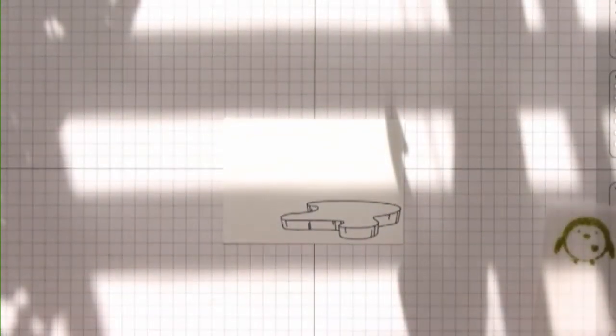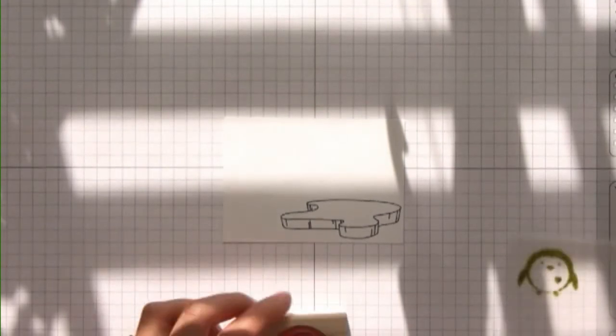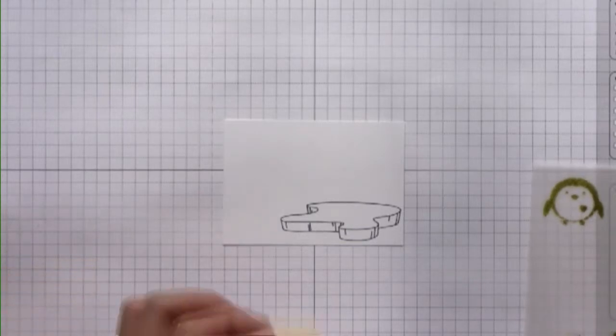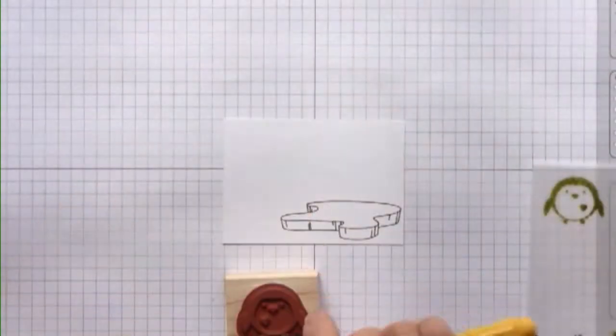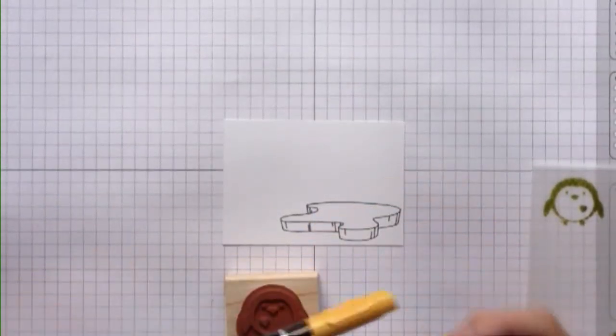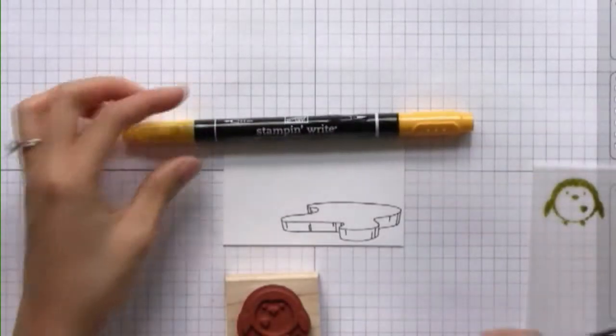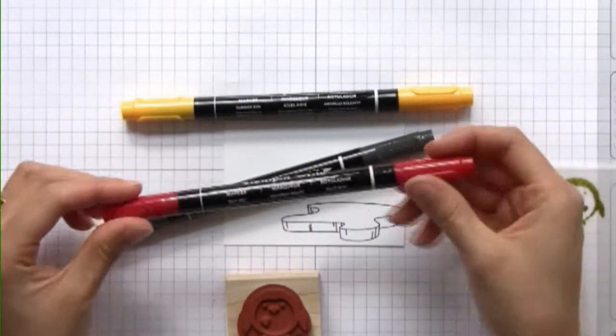Now I'm going to stamp this penguin and I'm going to be using the markers to do this so that I can get a multicolored image. I will be using the Summer Sun marker, Basic Black, and Real Red.